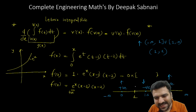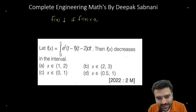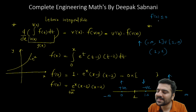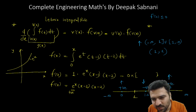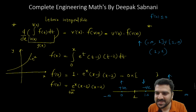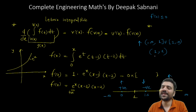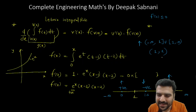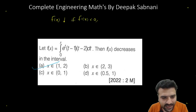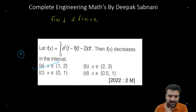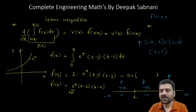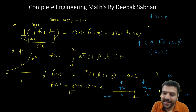If they ask for the decreasing interval, since f'(x) ≤ 0 at x = 1 as well, you can include the endpoints: [1, 2]. This inclusion or exclusion of endpoints depends on whether the question asks for 'decreasing' or 'strictly decreasing.' Here the question says decreasing, so the answer is option A — f(x) is decreasing on [1, 2] and increasing on (-∞, 1) ∪ (2, ∞). You can include or exclude 1 and 2 depending on whether strictly or non-strictly is asked.